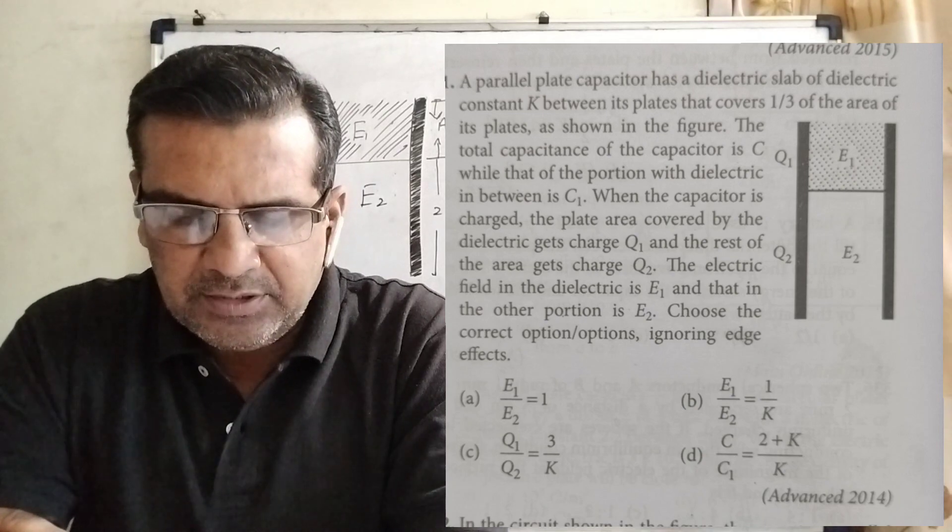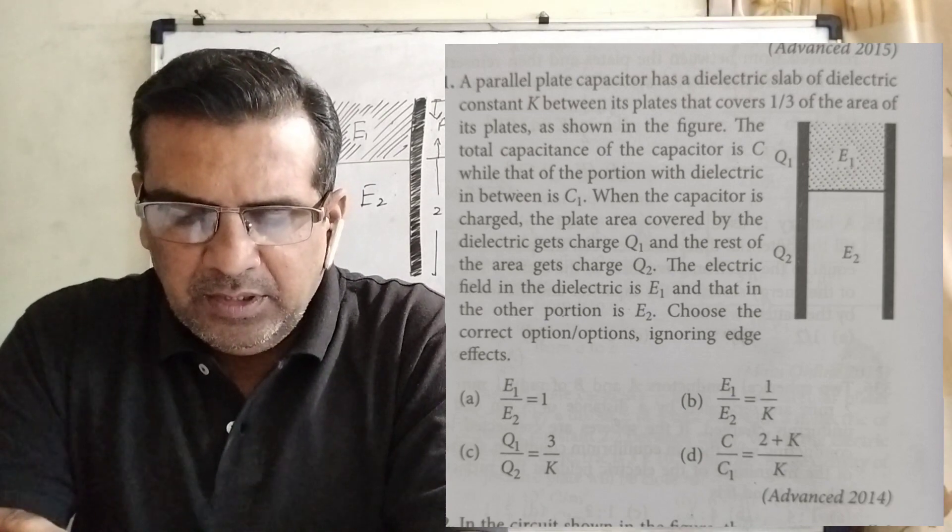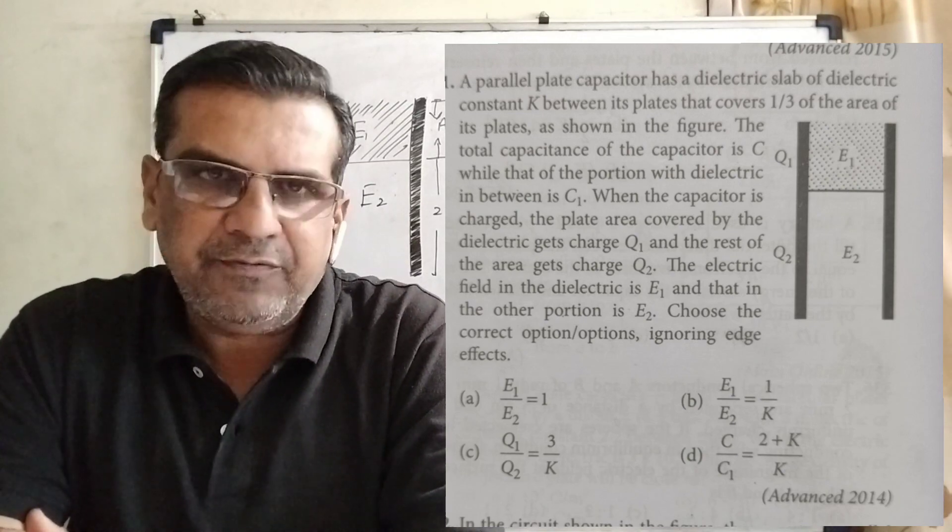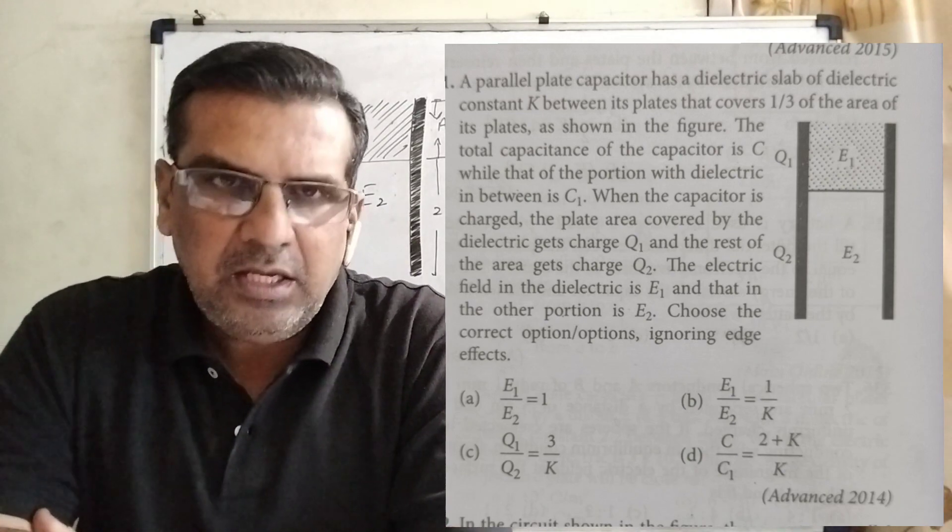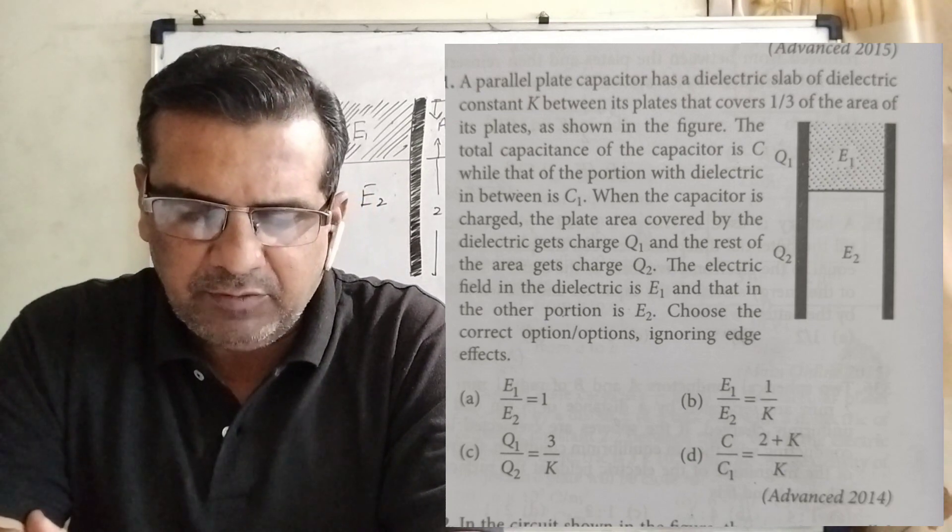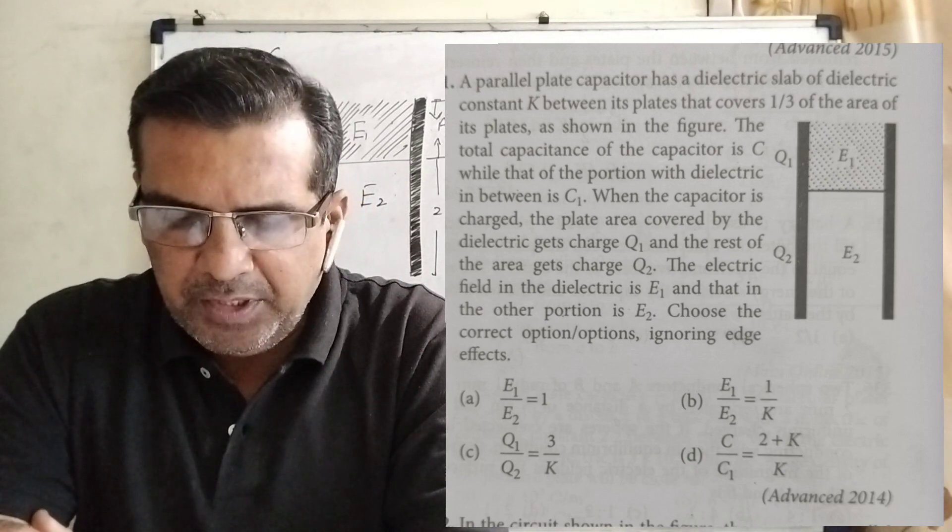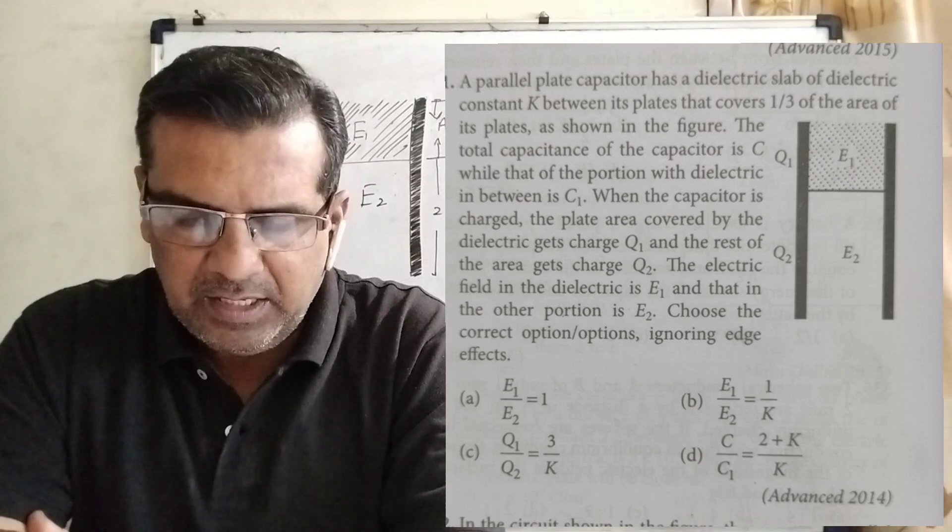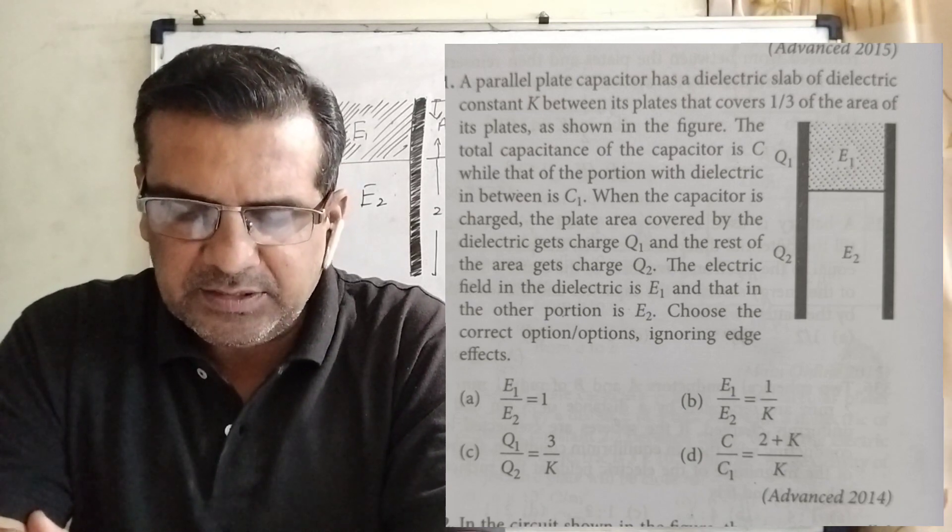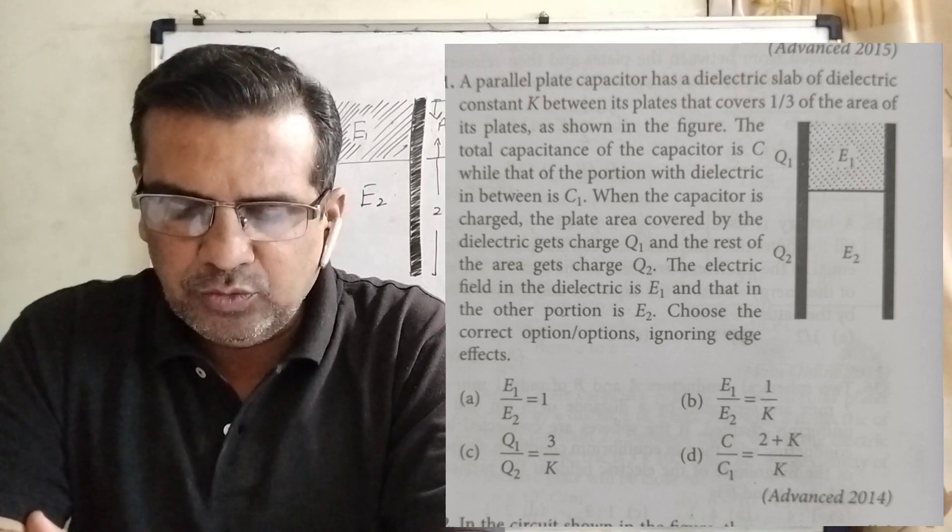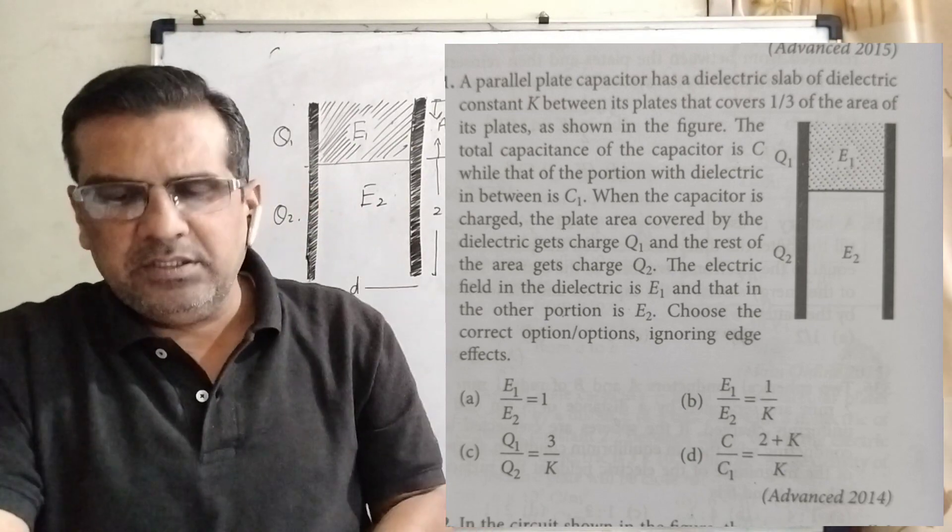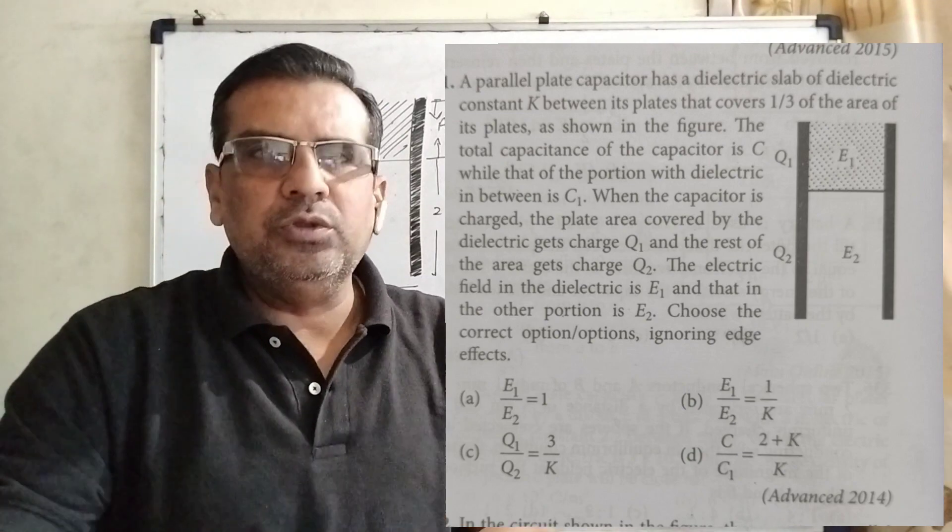Choose the correct option. It may be a multiple choice question, ignoring edge effects. Here A: E1 upon E2 is equal to 1. B: E1 upon E2 equal to 1 by K. C: Q1 upon Q2 equal to 3 by K. And last D option is C upon C1 equal to 2 plus K by K. This question is from JEE Advanced 2014.